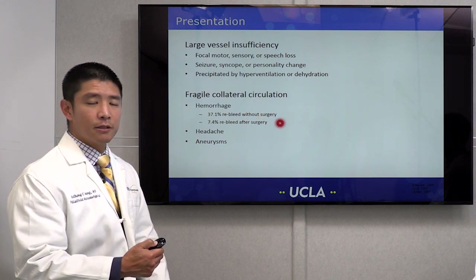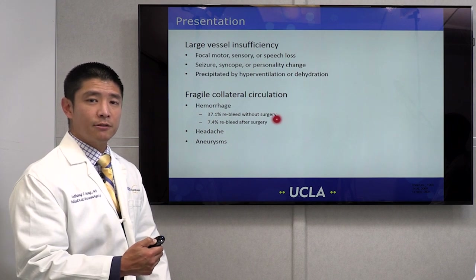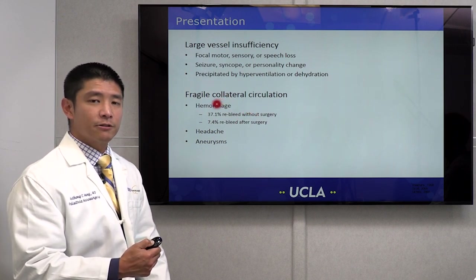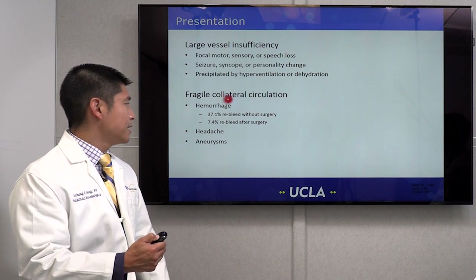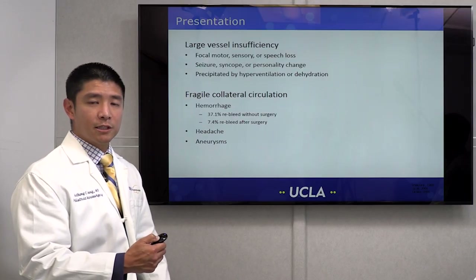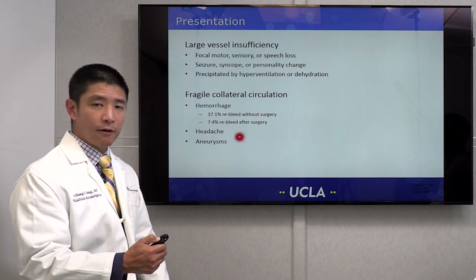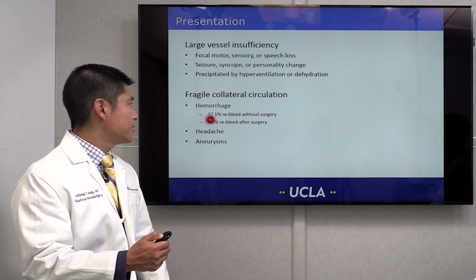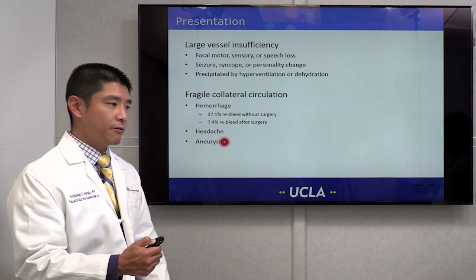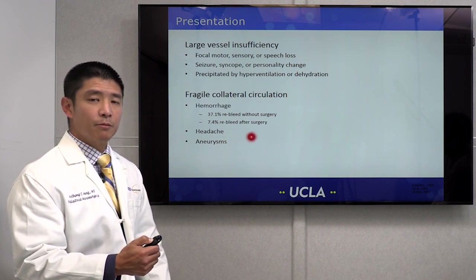One notable feature of Moya Moya disease vessels is that the collateral circulation that forms to accommodate the loss of large vessels is a little more fragile, so bleeding in the brain is an important presentation. The lack of blood flow and the resulting increase in the size of collaterals can sometimes result in headaches. Finally, the dilation — the increase in size of some of the smaller vessels — can result in the formation of aneurysms, which are an important risk factor for bleeding.